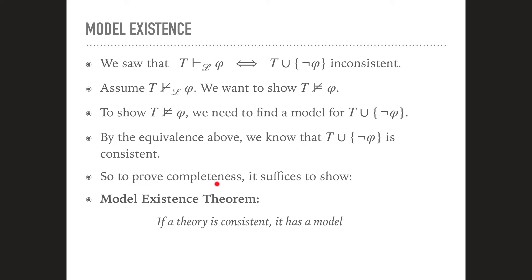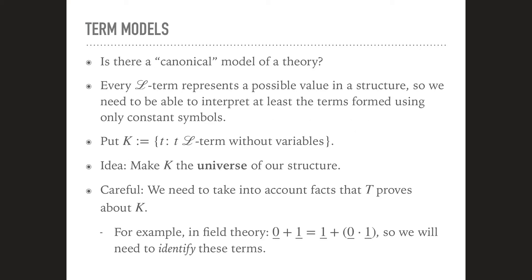So to prove completeness, it suffices to show the model existence theorem: if a theory is consistent, it has a model. So then we could apply it to this theory here and we would get that it has a model. So we would know that T does not logically imply φ. The big question is now, of course, how do we find such a model? Pretty much out of the blue because all we have is really the theory.